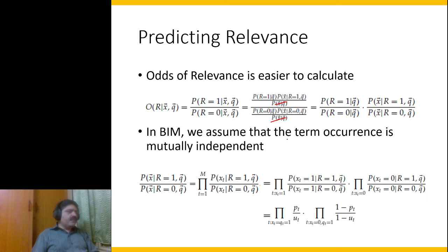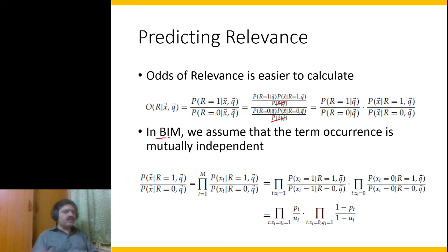Now we apply the Binary Independence Model assumptions. The first assumption is that we are dealing with binary vectors — either terms exist or do not exist. The second is the independence assumption: the existence of terms are mutually independent, so the existence of one term does not affect the existence of another.